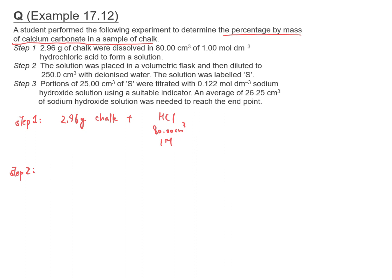Step 2: the solution was placed in a volumetric flask and then diluted to 250 cm³ with deionized water. The solution was labeled as S. So after step 2, we have the remaining HCl diluted to a total volume of 250 cm³ and labeled as solution S.